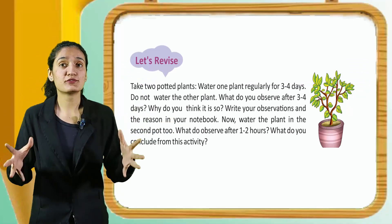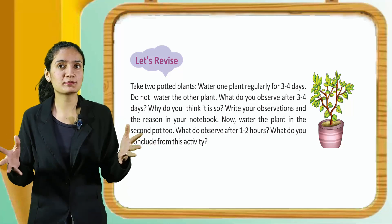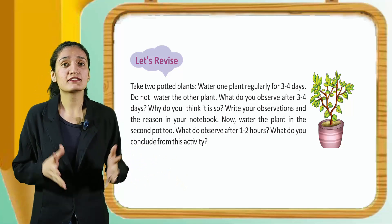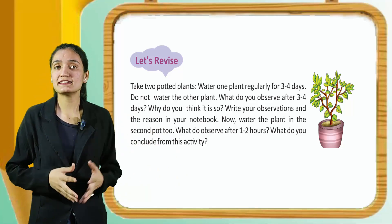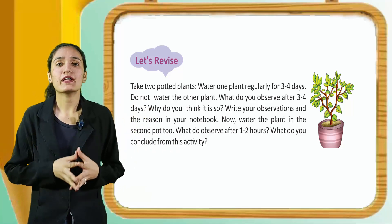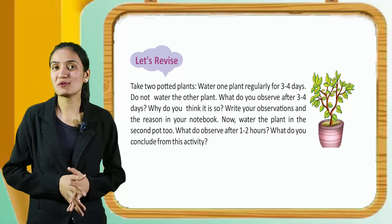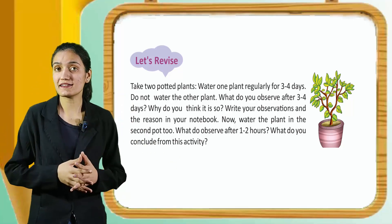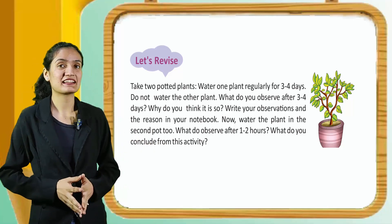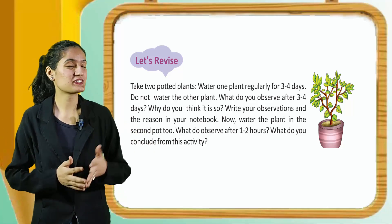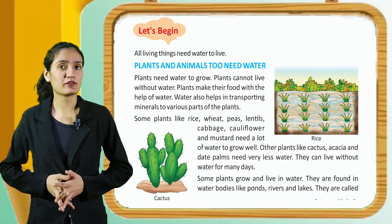Take two potted plants. Water one plant regularly for 3-4 days, and do not water the other plant. What do you observe after 3-4 days? Why do you think it is so? Write your observation and the reason in your notebook. What do you observe after 1-2 hours? What do you conclude from this activity? Write it down in your notebook.